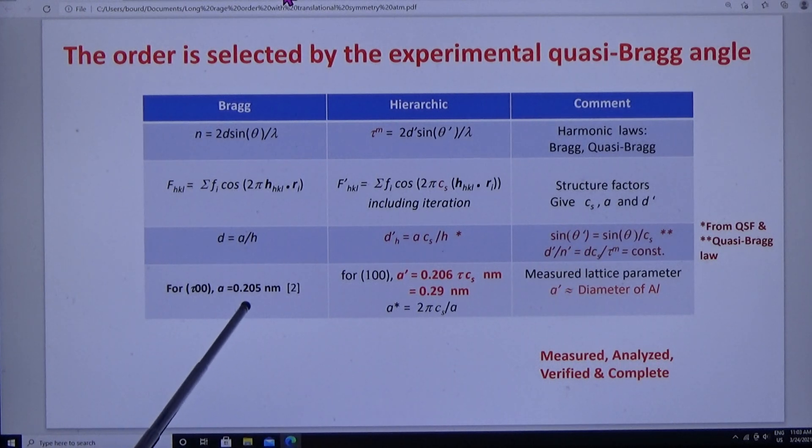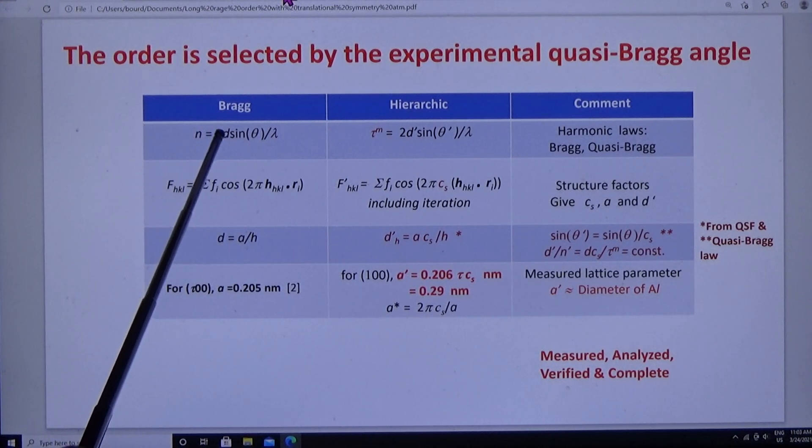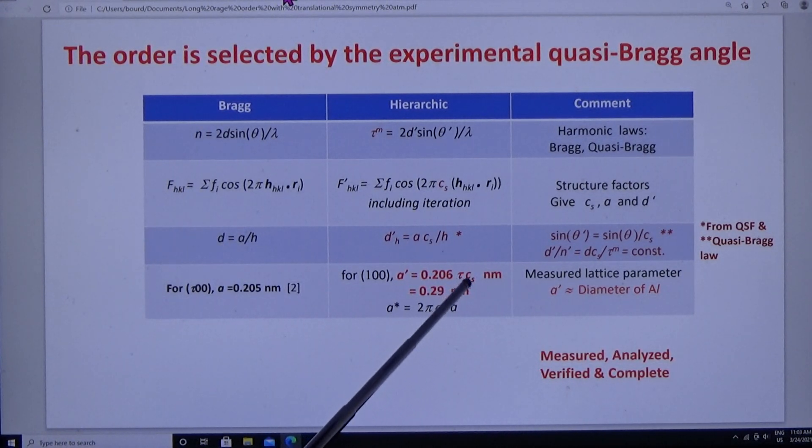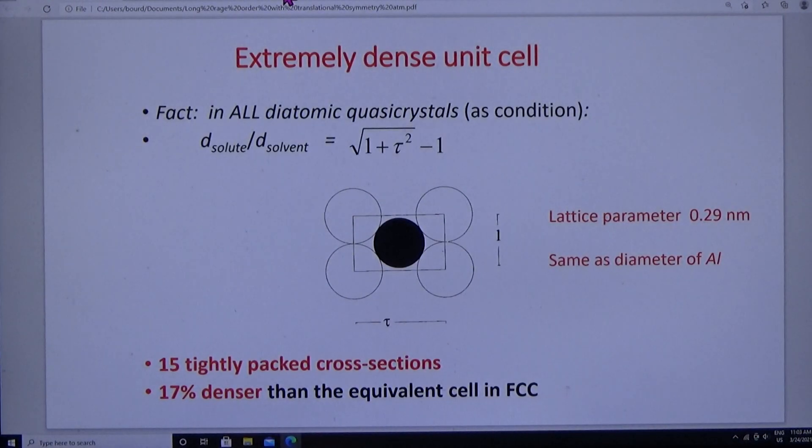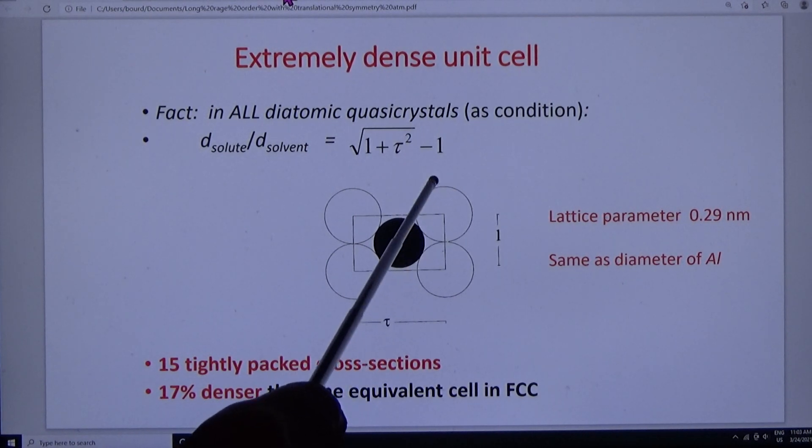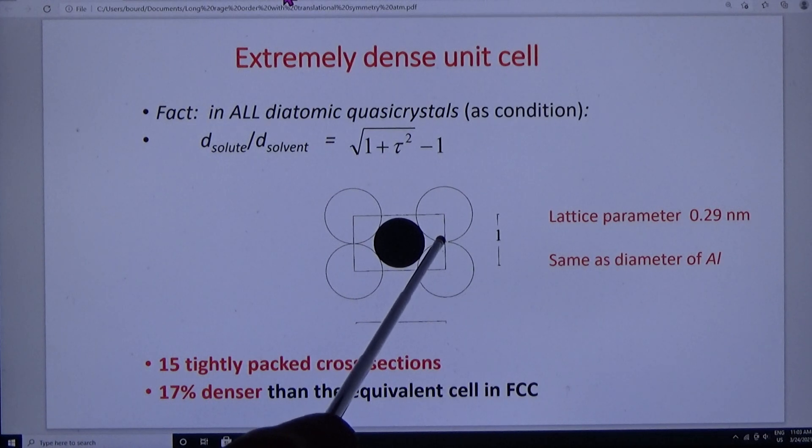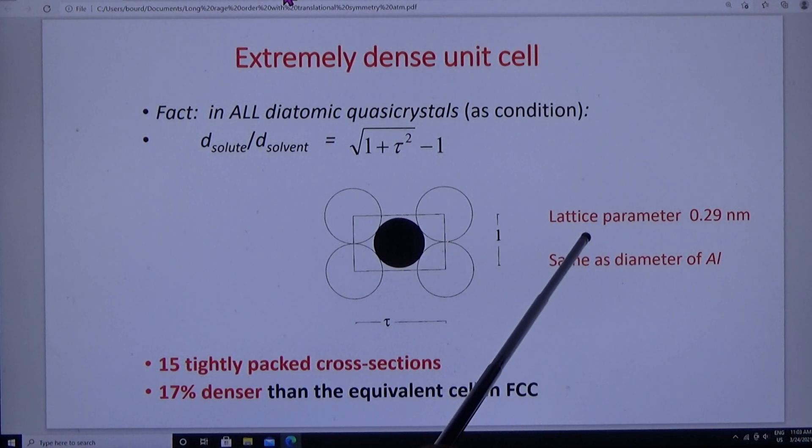And here's the lattice parameter, which several of us measured 30 years ago, based on the Bragg law, which we now correct with the metric and the index. And the answer is very important. It's 0.29 nanometers. And it's important for this reason: that 0.29 nanometers is the lattice parameter for the icosahedral structure and is the diameter of aluminum as it has to be - measured, analyzed, verified and correct.